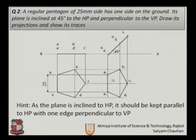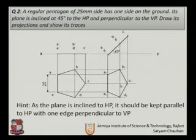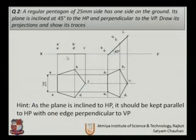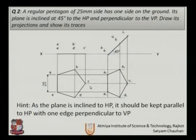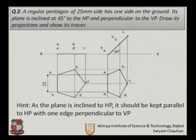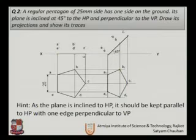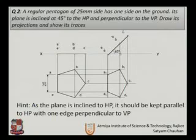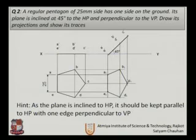Since the plane is inclined at 45 degrees, the top view of the second stage is also inclined. The true shape now changes to a reduced shape, and the top view of the pentagon will be a reduced size. We consider two hints: when parallel to the HP, we start from the top view in the first step, get the front view, and by drawing the inclination with the XY line, we obtain the reduced top view in the second stage.